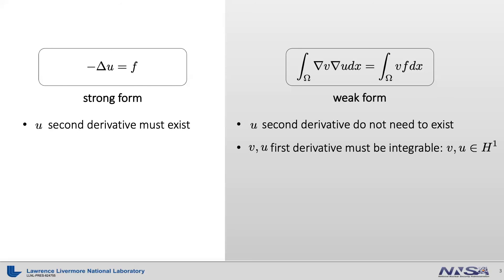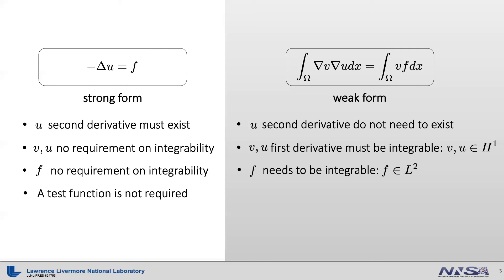In summary, we say that they are in H1 Hilbert space. On the other hand, U and V functions in the strong form do not have to be integrable. The same for F in the strong form. It does not have to be integrable, while F needs to be integrable for the weak form. Strictly speaking, it needs to be L2 Hilbert space. Finally, the strong form does not need any test function, while the weak form does need a test function.